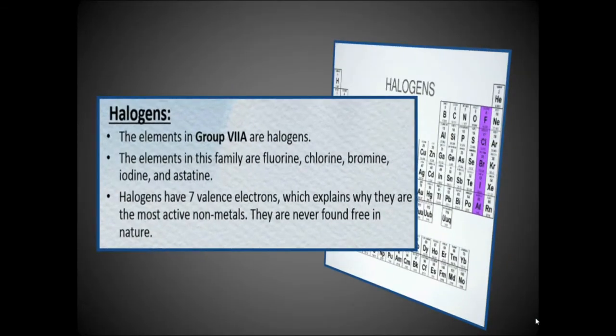Halogens: the elements in Group 7A are halogens. The members of this family are fluorine, chlorine, bromine, iodine, and astatine. Halogens have seven valence electrons, which explains why they are the most active non-metals. They are never found in free state.